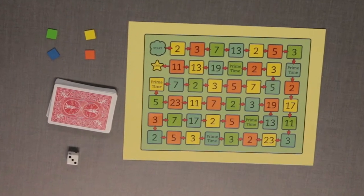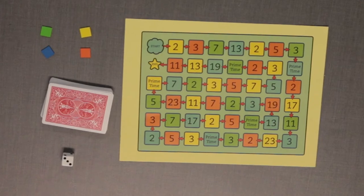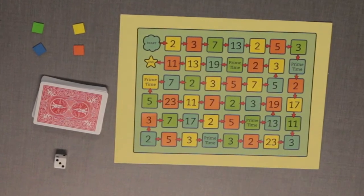You will need one die, a deck of cards, different color markers, one for each player, and the prime time game board.